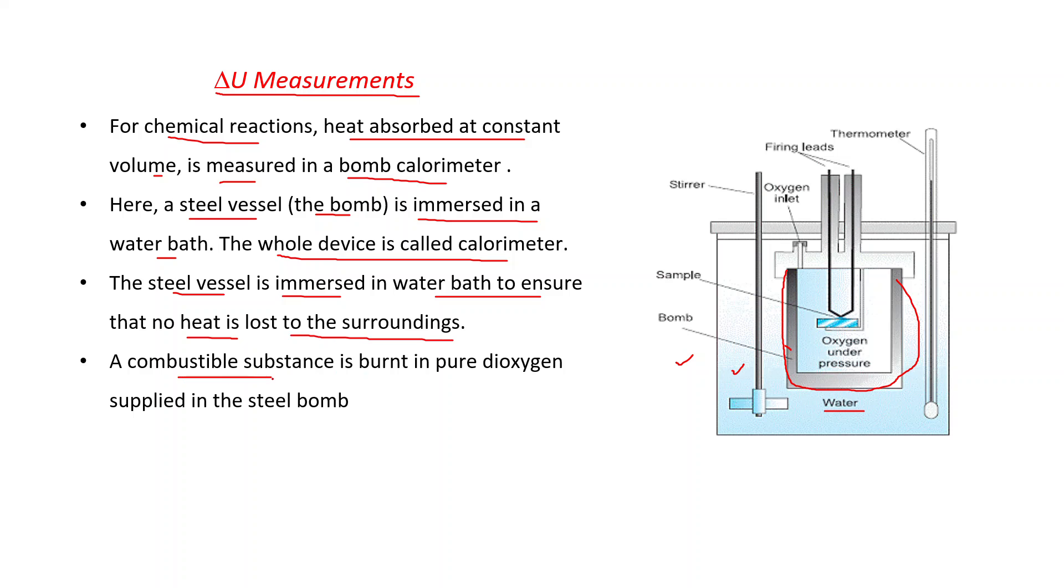A combustible substance is burnt in pure oxygen supplied in the steel bomb. See, this is the sample. And when we supply the oxygen then this will burn and produce the heat.